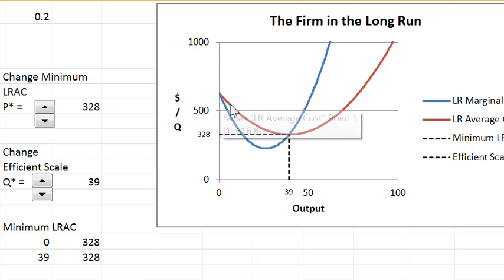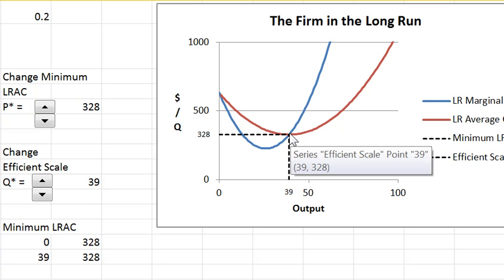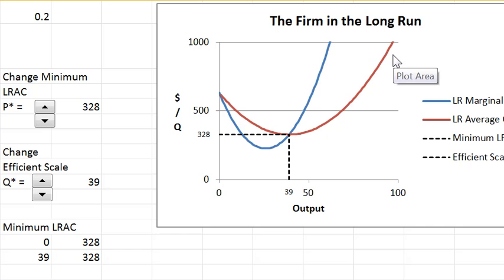The reason why average cost falls at the beginning is increasing returns to scale. So we think at low output levels for the firm, increasing returns is the rule. Eventually, those stop. You may have a flat region of constant returns. In this case, you only have constant returns at this one point, which is called the efficient scale. And then average cost rises, and that's the region of decreasing returns.